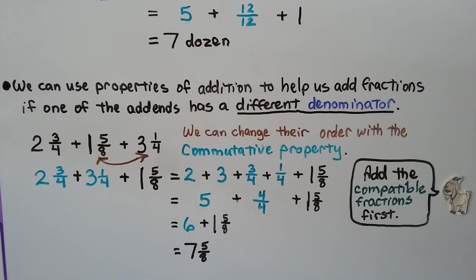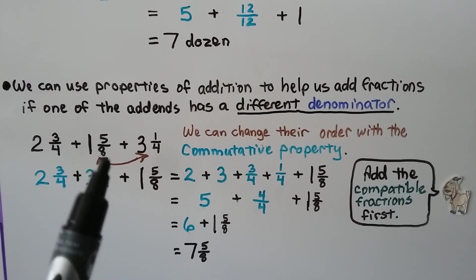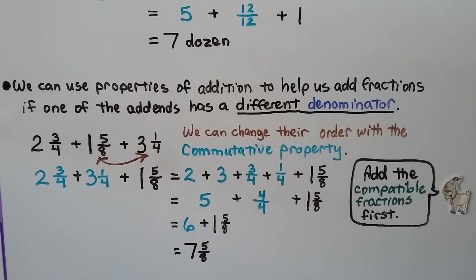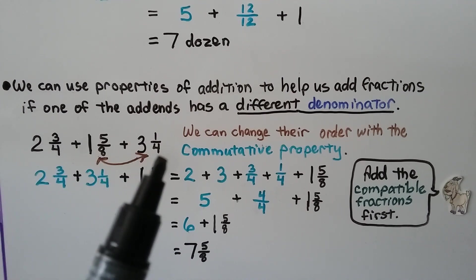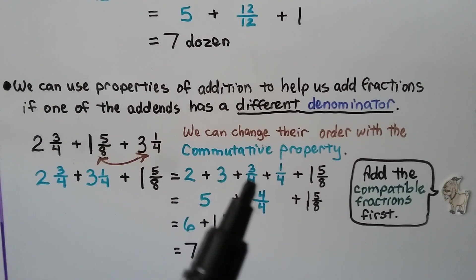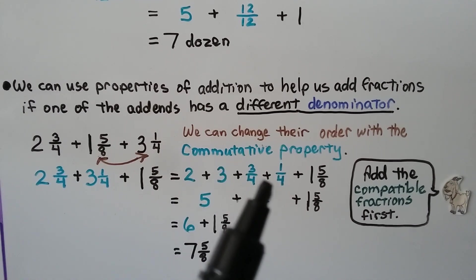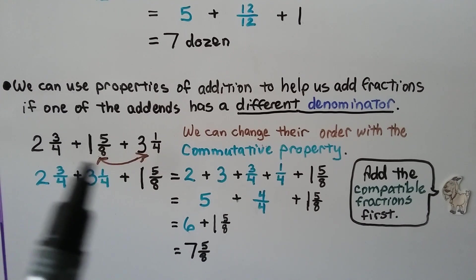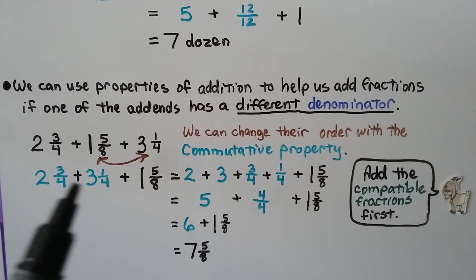We can use properties of addition to help us add fractions even when one addend has a different denominator. This one has a denominator of 4, and so does this one, but this one has a denominator of 8. We use the commutative property to change their order, placing the 3 fourths and 1 fourth together. Now we have 2 and 3 fourths plus 3 and 1 fourth: 2 plus 3 is 5, and 3 fourths plus 1 fourth is 4 fourths, giving us 5 and 4 fourths. Then we add 1 and 5 eighths to get 7 and 5 eighths. It didn't matter that they had different denominators because those two fractions created one whole.